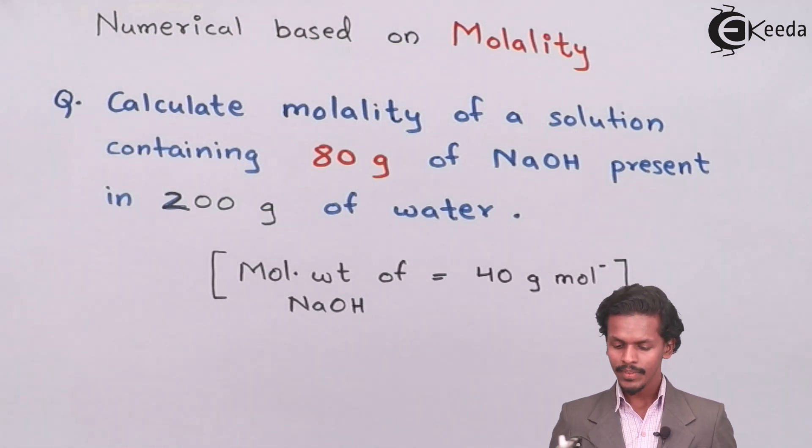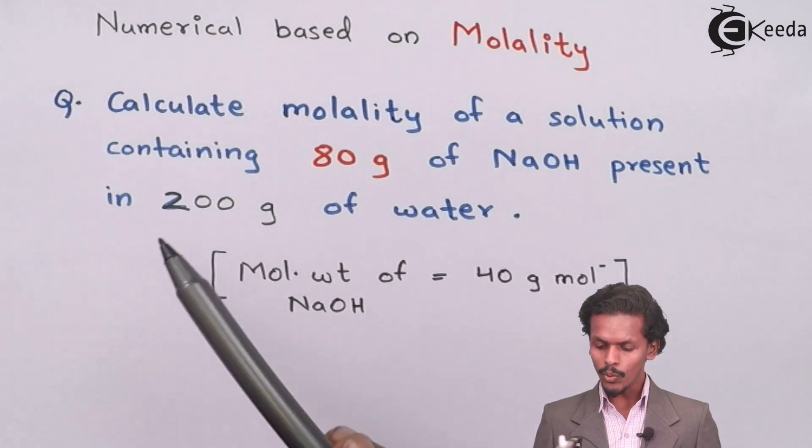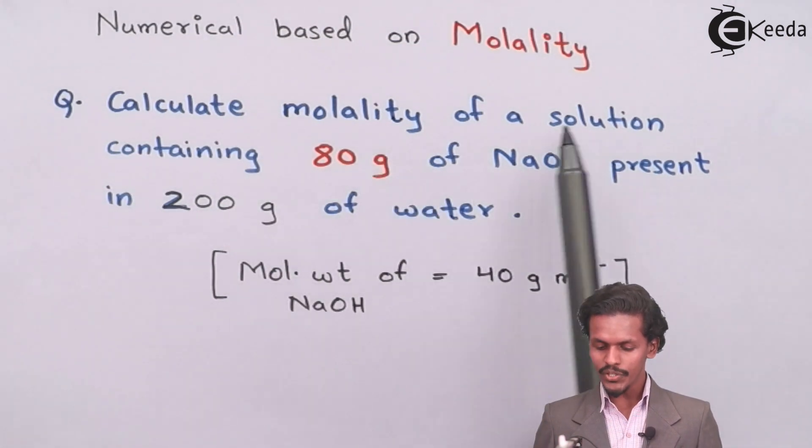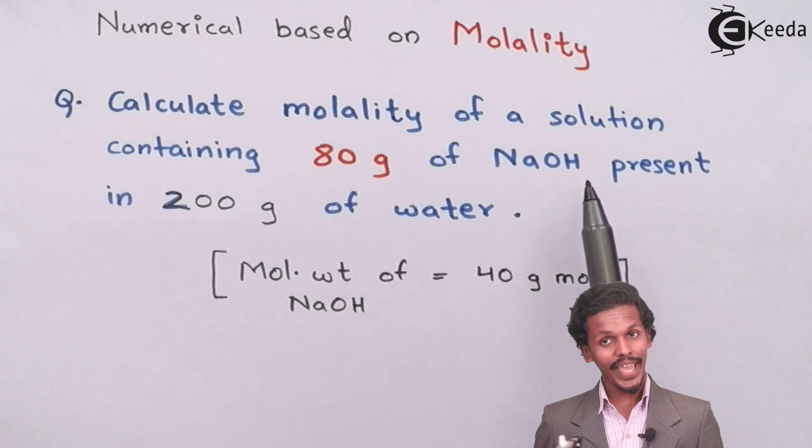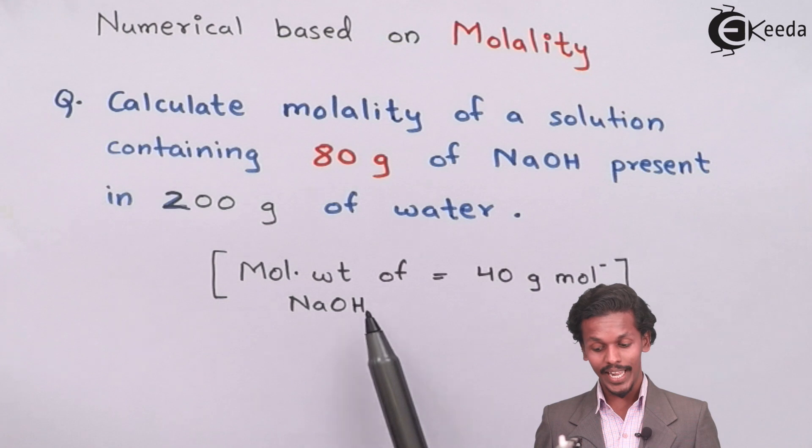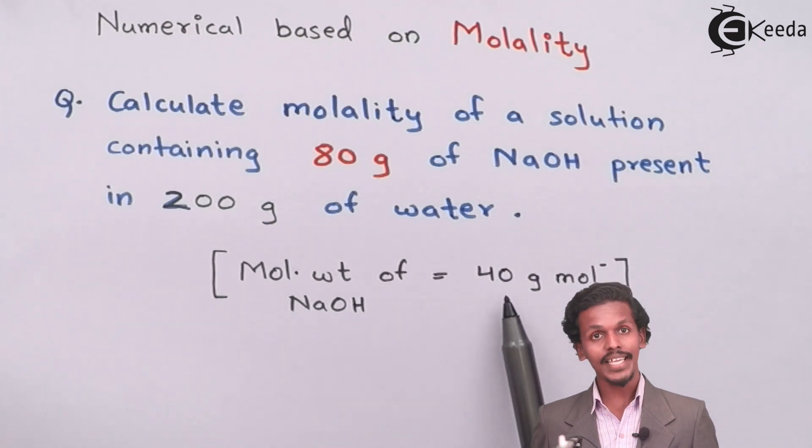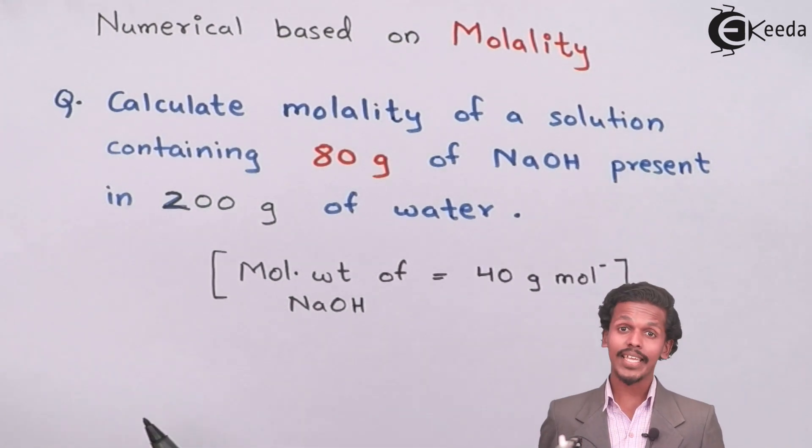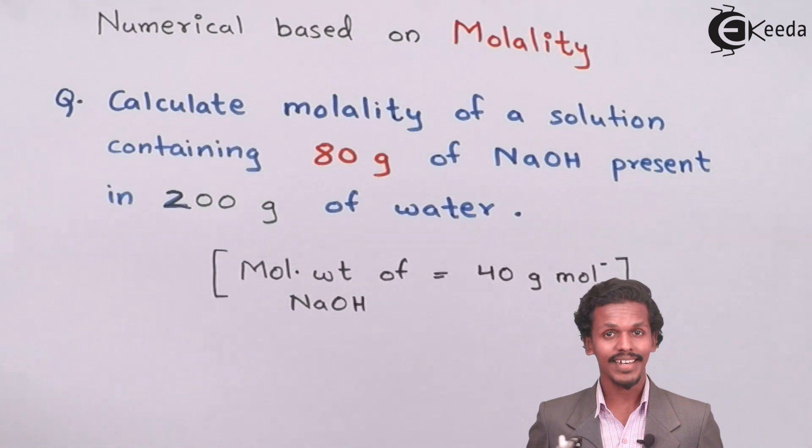We have a question: calculate the molality of a solution containing 80 grams of NaOH present in 200 grams of water. The molecular weight of NaOH is given as 40 grams per mole. So how can we calculate the molality? Let us see.